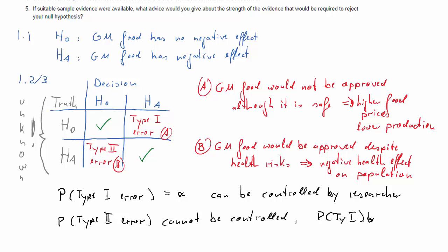In general, if you specify a lower Type I error, that will result in a higher Type II error. So when you set up your hypothesis, you need to figure out which of these two mistakes do I really want to control.